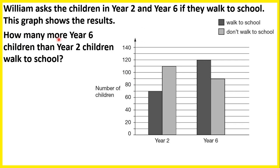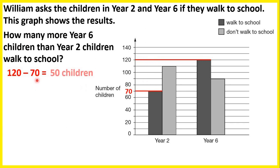Now, how many more year 6 children than year 2 children walk to school? In year 6, walk to school is the dark grey bar, and if we go across, we can see that 120 children in year 6 walk to school. But for year 2, that's between 60 and 80, so 70 children. The question says how many more, so we need to find the difference using subtraction. 120 minus 70 is 50, so 50 more year 6 children than year 2 children walk to school.